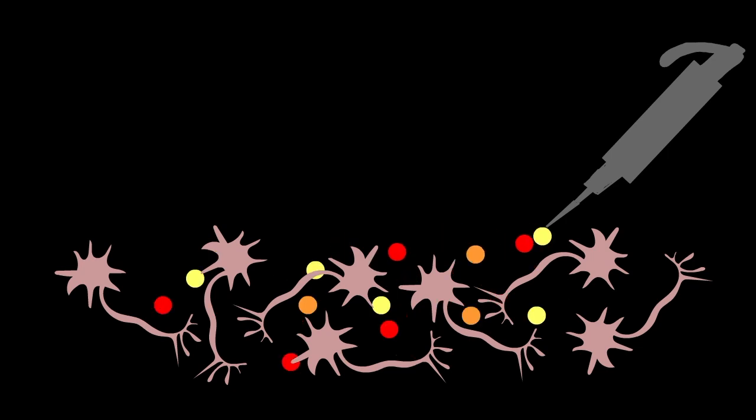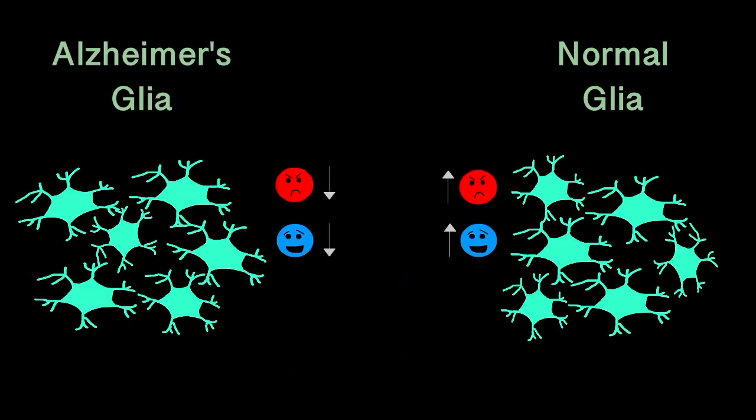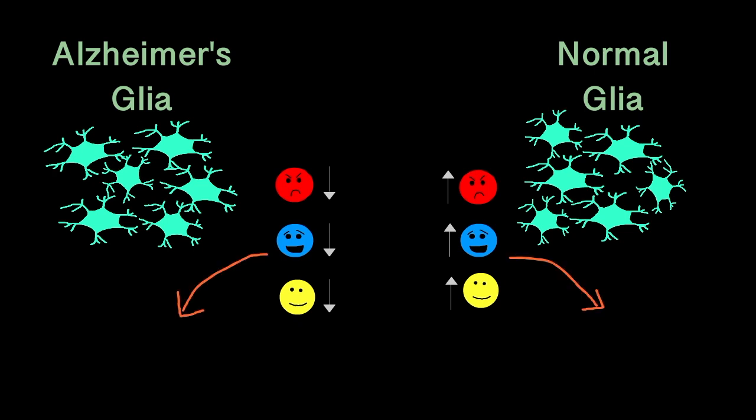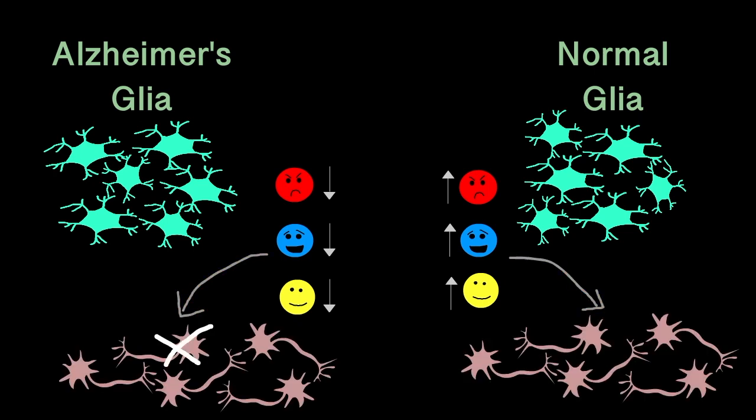We saw that Alzheimer's glia secreted less of almost all cytokines compared to healthy glia. The neurons that received media with less cytokines also died at a higher rate.